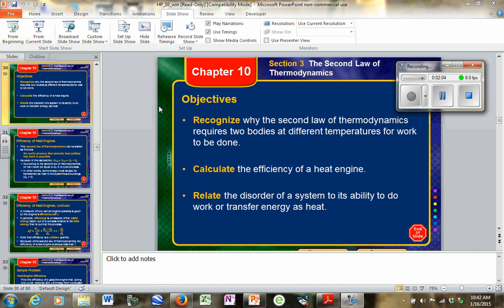You want to be able to recognize why the second law of thermodynamics requires two bodies of different temperature for work to be done. Again, that's going to be that schematic with the heat source and the heat sink. Okay, so that's what you want to think when you think two bodies. Where's the heat coming from? Where's it going? Calculate the efficiency of a heat engine. That's mostly going to be there from page 20 in your handout. And then relating the disorder of system, that's what you'll do in the reading and in watching the video, the online video there from 60 Symbols. That'll be taken care of with that.